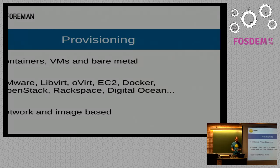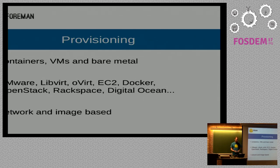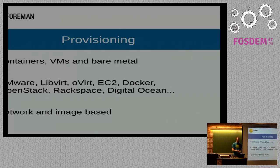Foreman provisions containers, VMs, or bare metal. I've heard a story that someone was actually trying to provision cash registers in a supermarket, but the hardware just couldn't handle it. Foreman works with most well-known compute resource providers like VMware, EC2, Amazon — you name it. If you think we're missing something, let us know, and you can always write your own plugin. Foreman does both network and image-based provisioning.